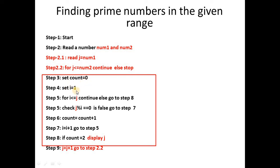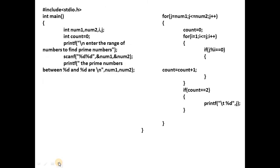We repeat: i starts from 1 again, i less than or equal to j (now 11), check factors, if count equals 2 display it. Then increment j to 12, continue to 30. When j becomes 31, 31 less than or equal to 30 is false, so we stop. This is the actual algorithm behind finding prime numbers in a range.